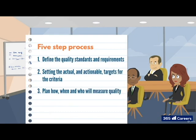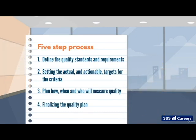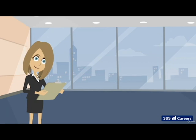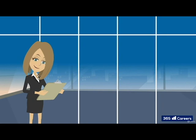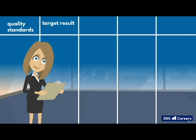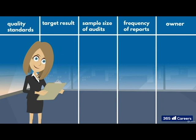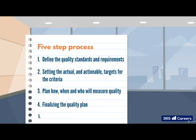Moving on to step 4: finalizing the quality plan. The project manager takes all the information gained so far and collates it into a simple table. The table should show the quality standards, a metric for each standard, the target result, sample size of audits, the frequency of reports, and the owner. Once all of this is done and dealt with, the final thing for the project manager to do is to make adjustments to their project constraints, if necessary.